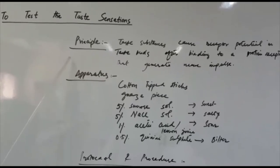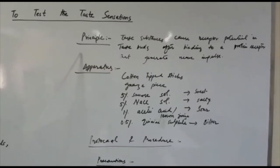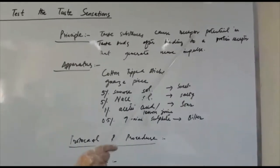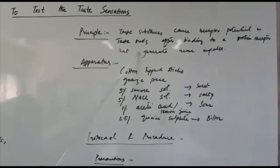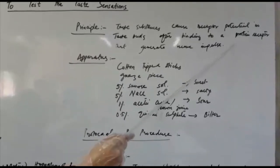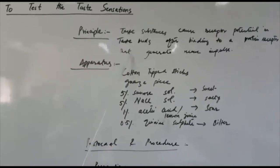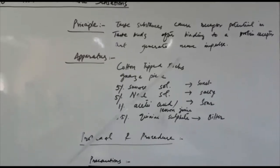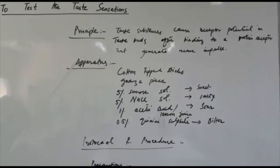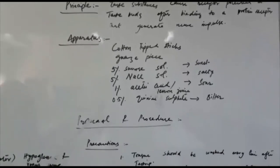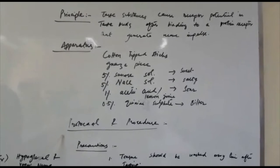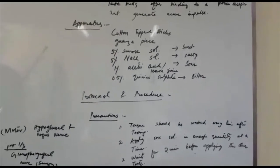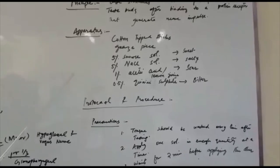Now the principle of this practical is that when we apply a substance for taste, it causes receptor potential in taste buds after binding to a protein receptor on them and this generates a nerve impulse which is transmitted to brain stem and then higher brain centers. Now let us study the practical aspect of this taste sensation. How will you perform this practical?